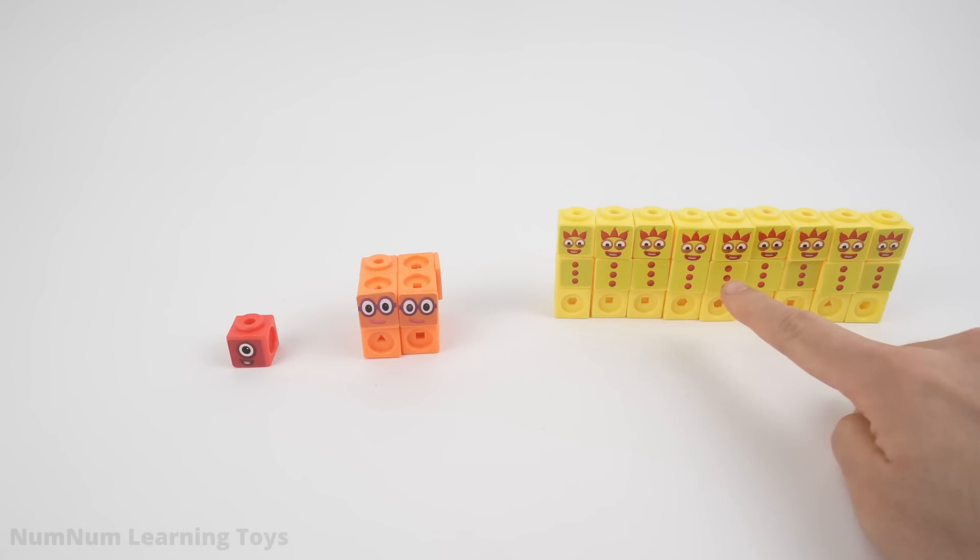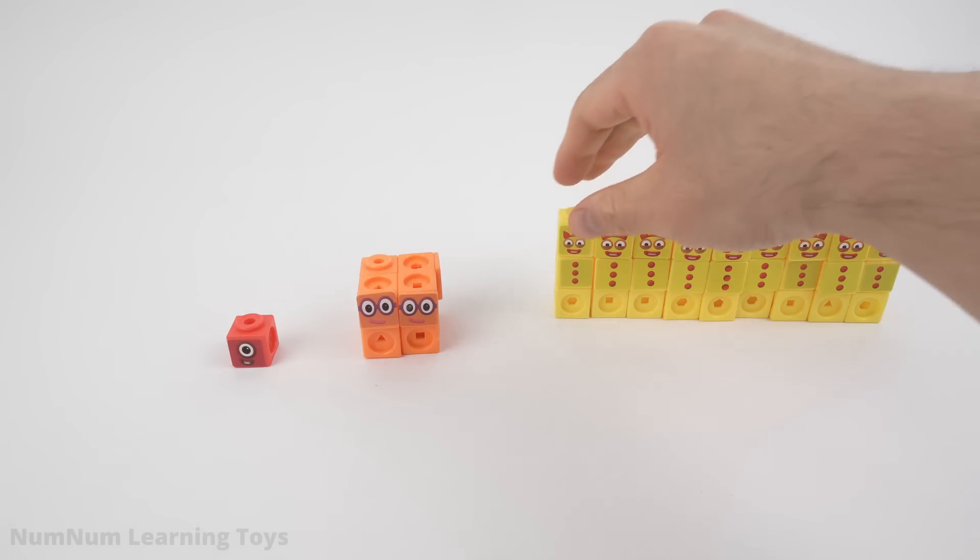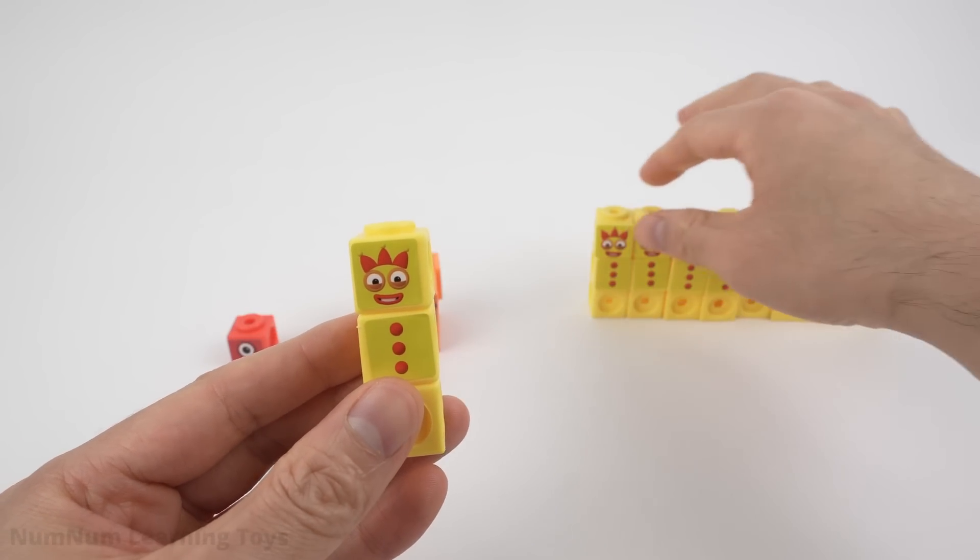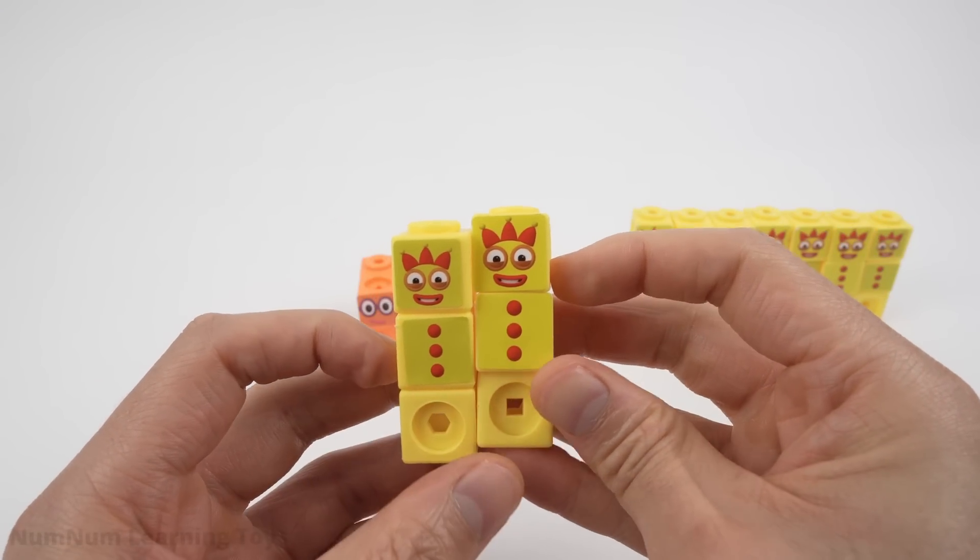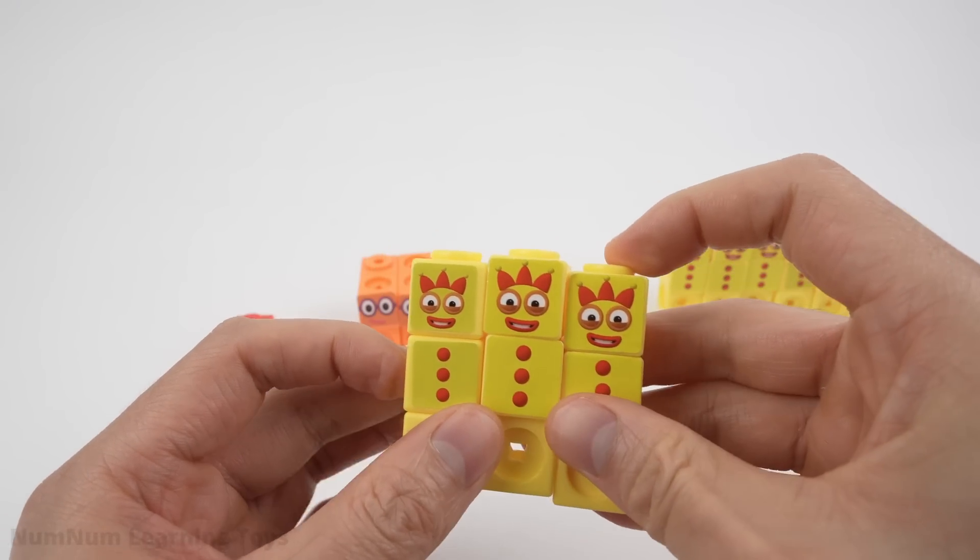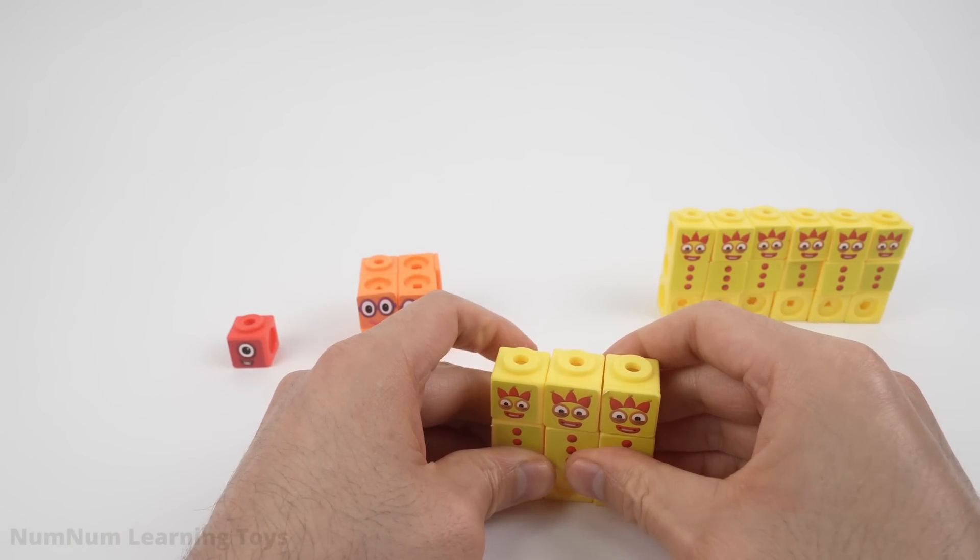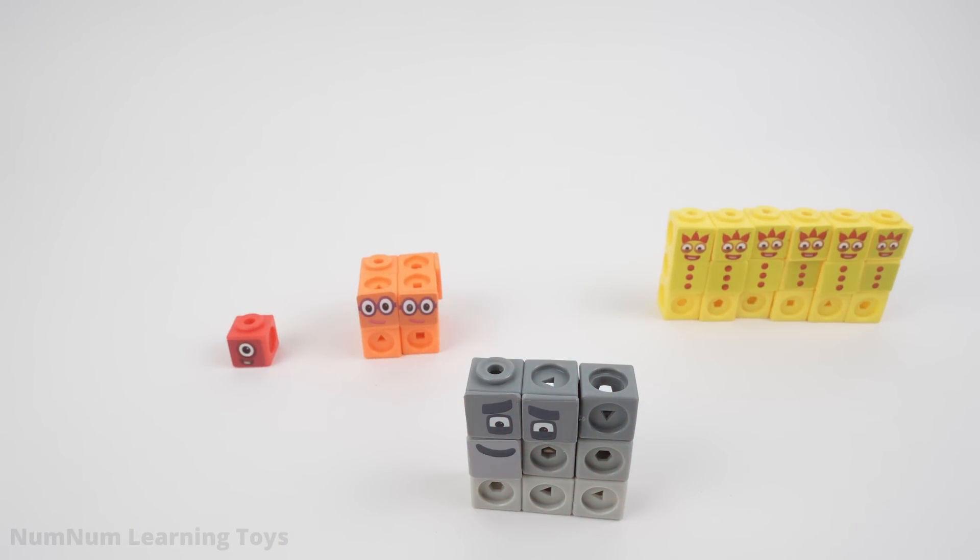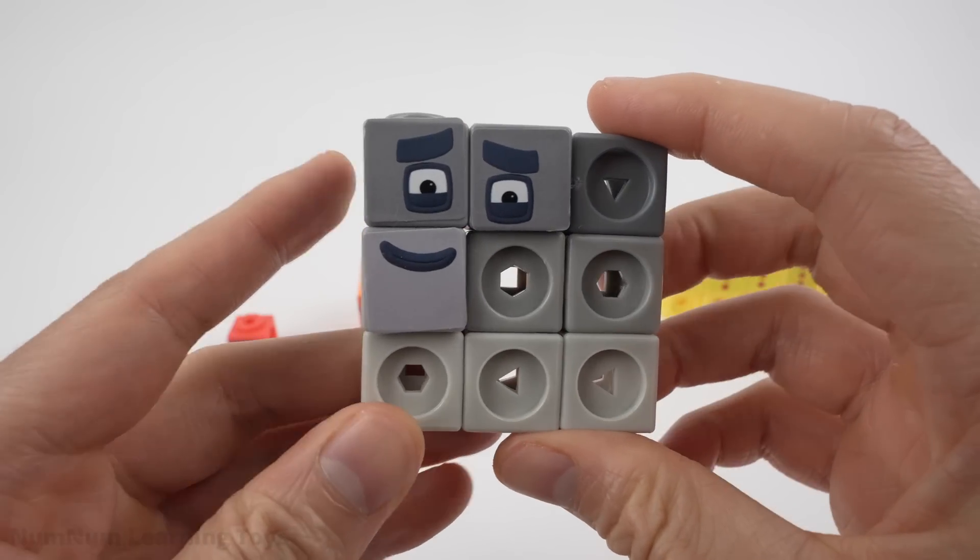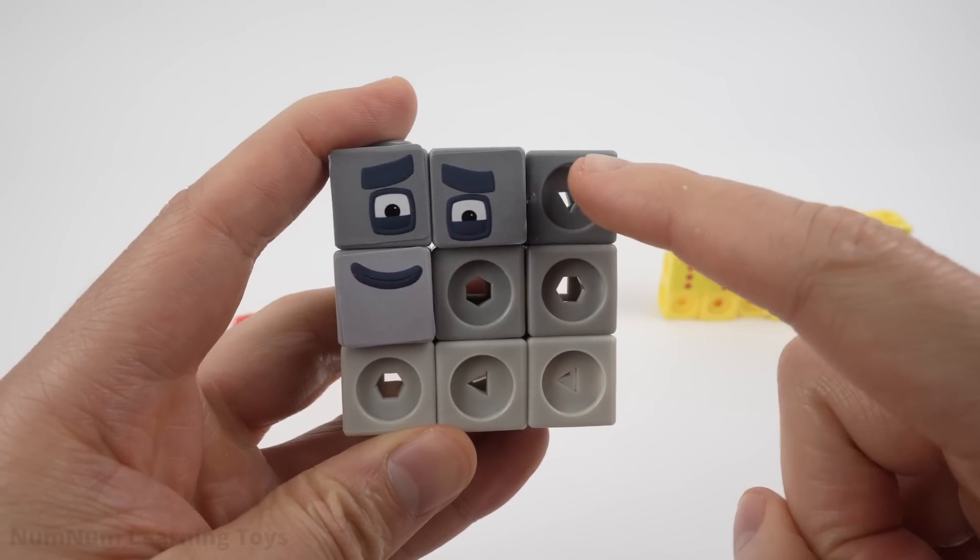Let's build the next cube using 3's. How many 3's do we need to build a square? We need 3 lots of 3 to build a square. A 3 by 3 square. Look, we have 9. 9 is made of 3 3's.